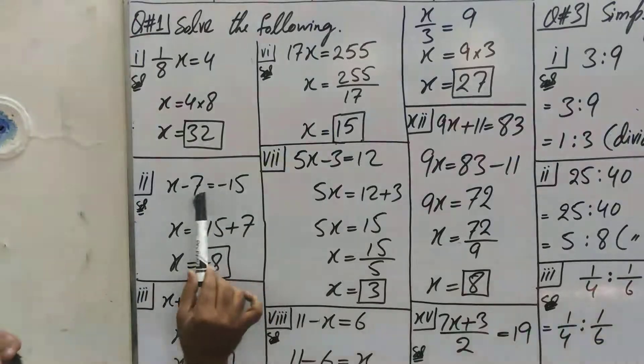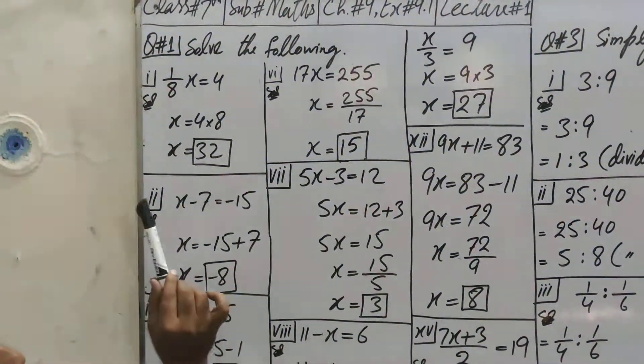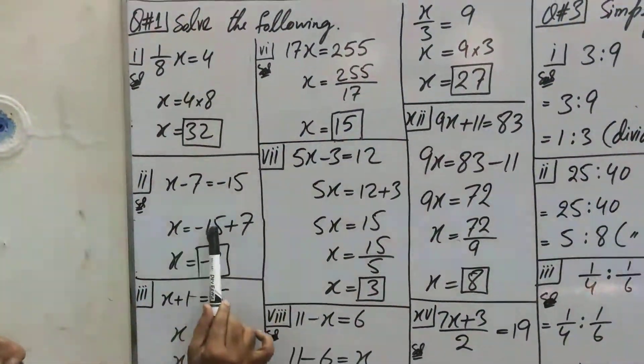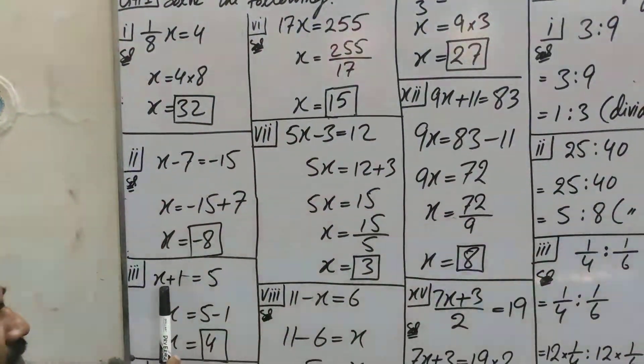This is the second part. x - 7 = -15. This minus 7 here will be plus 7, so -15 + 7 = -8.